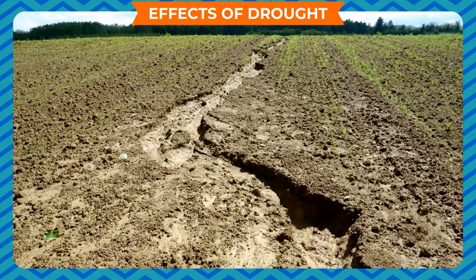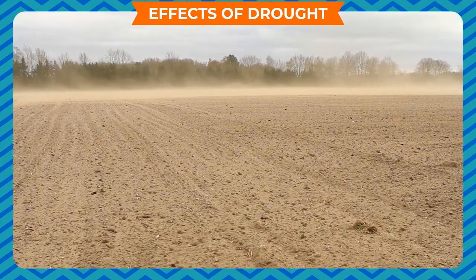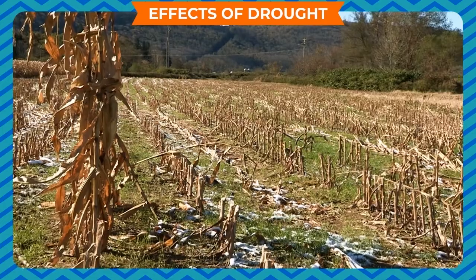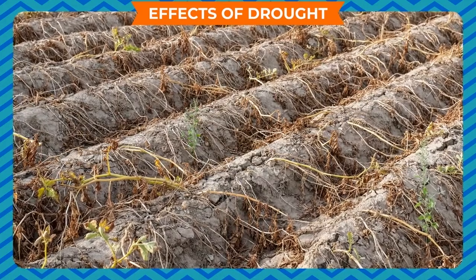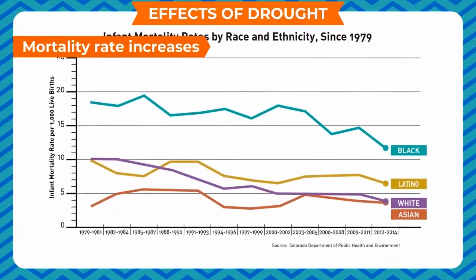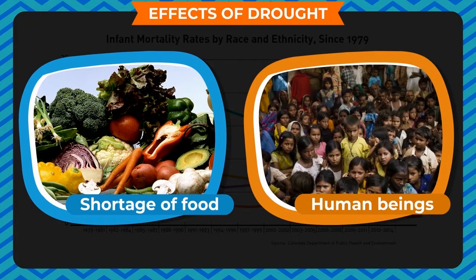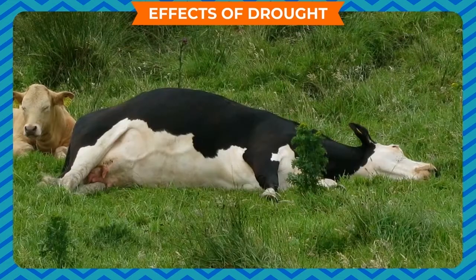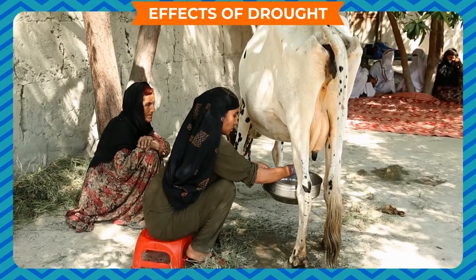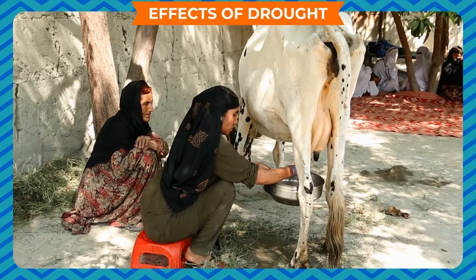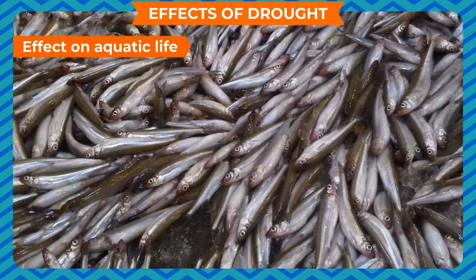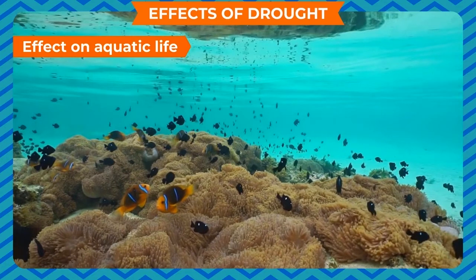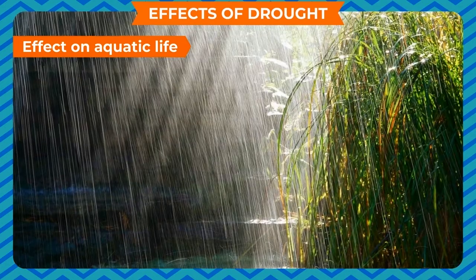Effects of drought: Due to excessive dryness, topsoil is blown away by wind, resulting in soil erosion. Scarcity of fertile soil adversely affects agriculture, leading to food shortage. Mortality rate increases as human beings and cattle do not get enough food or fodder; animals gradually become weak and die, and milk yield also decreases. Due to scarcity of water in water bodies, aquatic life is also affected and eventually perishes. Hence it is necessary to have a balanced average rainfall throughout the year.